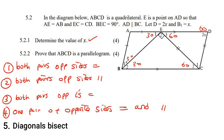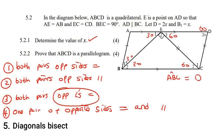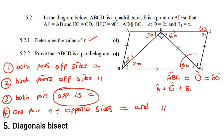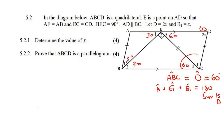I think the angle approach will work best here. We need to prove that opposite angles are equal. We can already see that angle ABC equals angle D because they are both equal to 60 degrees. Now we just need to show the other two angles are equal. Working in the triangle, angle A plus angle E1 plus angle B1 equals 180, so angle A equals 180 minus 30 minus 30, giving angle A equal to 120 degrees.